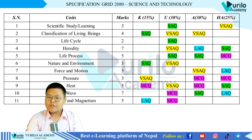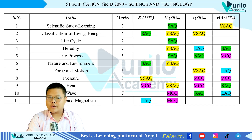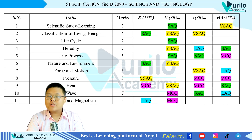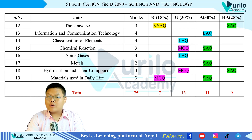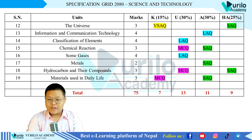Regarding marks distribution by cognitive level: Knowledge-based questions make up 30%, Understanding-based questions make up 30%, Application questions make up 25%, and Higher Ability questions make up 15% of the total marks.